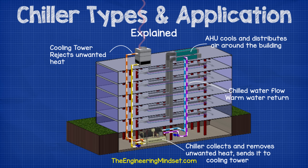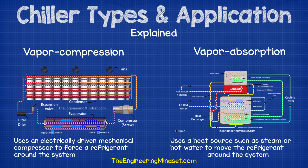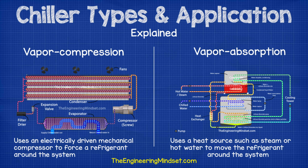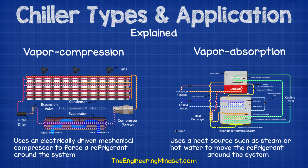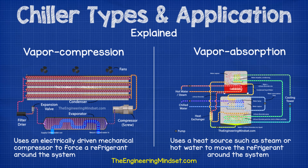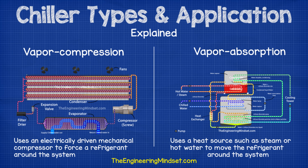Just to recap: chillers are simply machines used to generate cold or chilled water, which is distributed around buildings to provide air conditioning. They are also used in some industrial processes, but we're going to primarily focus on the application in air conditioning of buildings. There are a lot of different types of chillers, and they are categorized by types, so it's important you understand what the names mean, the differences between them, when and where they are used, as well as why.